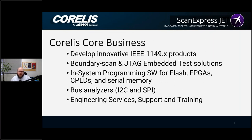We develop products around the IEEE 1149.1 standard. That includes not just .1, but the standards related to it. For example, 1149.6 lets us test high-speed transceiver nets at low speed. What we're going to talk about today are some interesting ways of using the 1149.1 standard outside of boundary scan. Our main product line is JTAG boundary scan, and today we're going to talk about the different applications of using that JTAG port for other uses.